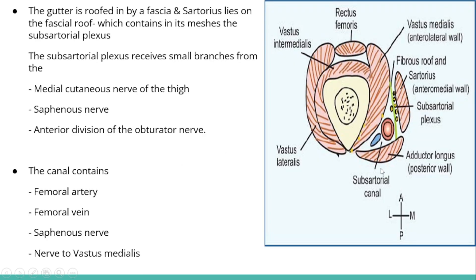You can see from this picture very clearly. The vastus medialis muscle forms the anterolateral wall of the adductor canal, and then the adductor longus forms the posterior wall. The anteromedial wall is formed by the sartorius muscle. Beneath the sartorius there is a fascial fibrous roof — this is the fascial roof of the adductor canal.